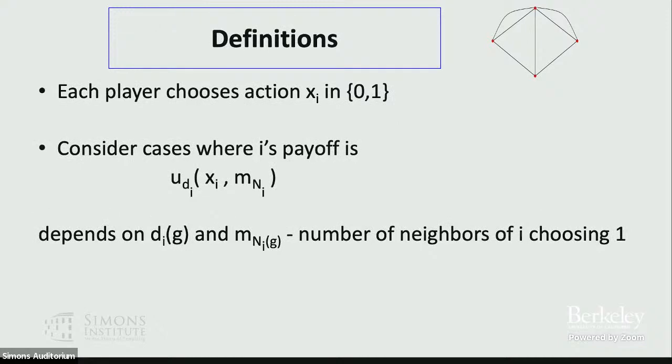Each person chooses an action in {0,1}, and we're going to consider payoffs of a special kind. Each person gets some benefit from making this choice, which depends on what their degree is — how many friends do I have? And then N(i) is the number of people in my neighborhood who are also taking this action. If I'm going to learn to play a certain video game, more people playing that game makes it more likely that I want to play it myself.